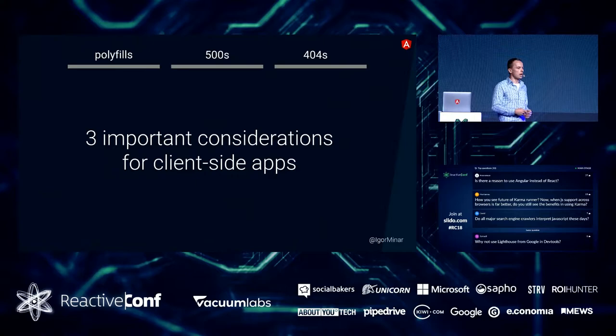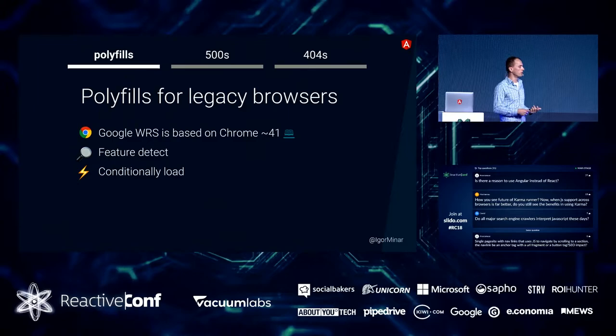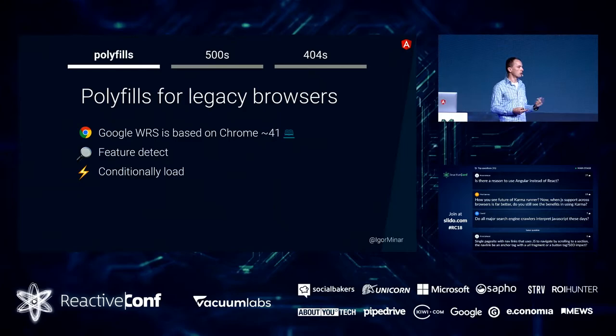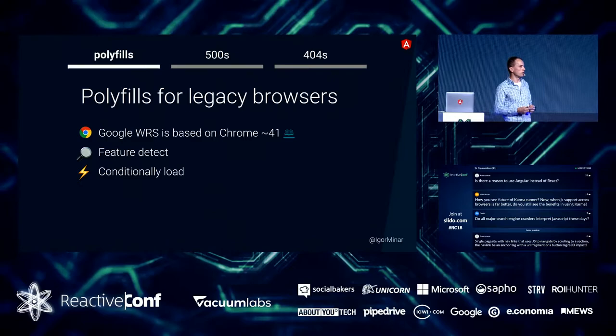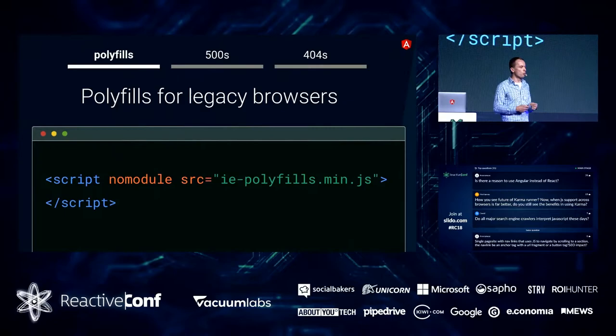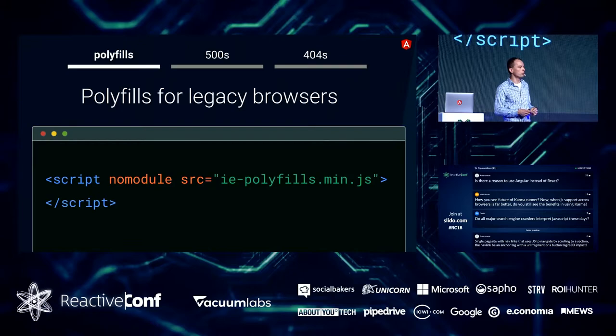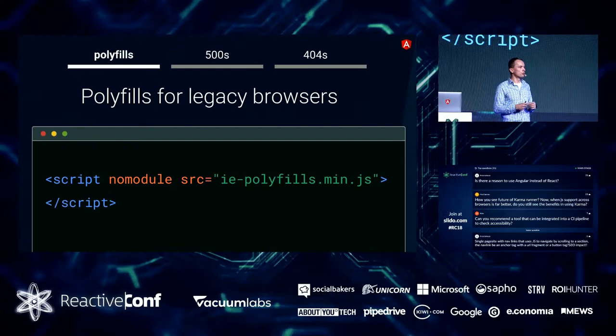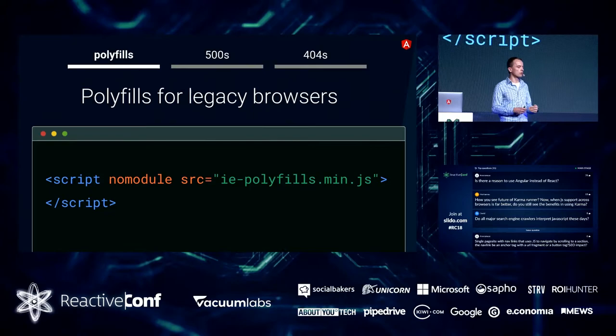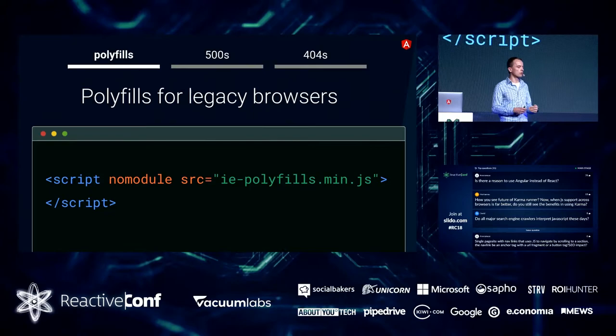If you want your application to be compatible, there are three things to consider. First, provide the right polyfills, because this is a legacy browser. You should feature detect, because I expect the version will change in the future. And you should conditionally load these polyfills so that your users don't pay the penalty if they're using an evergreen browser. On Angular.io, we provide the same polyfills we build for IE and conditionally load them using the no-module attribute, which does both feature detection and conditional loading.